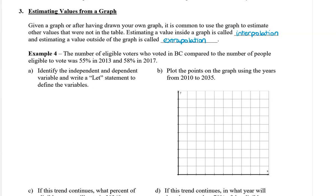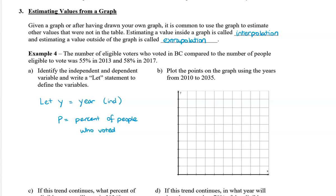We can see that the percent is dependent on the year. So we're going to write: let y equal the year — this is our independent variable. And then p for the percent of people who voted — this is the dependent variable.